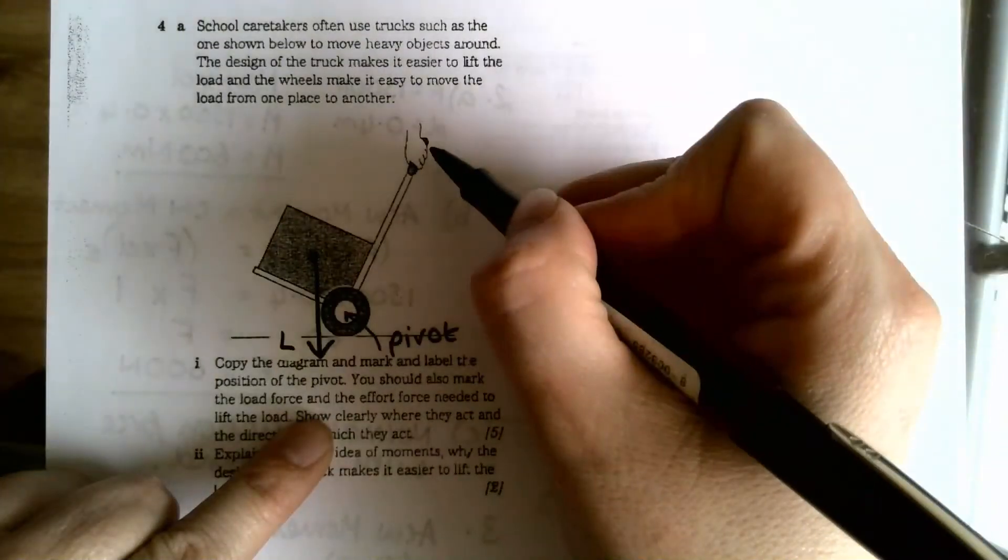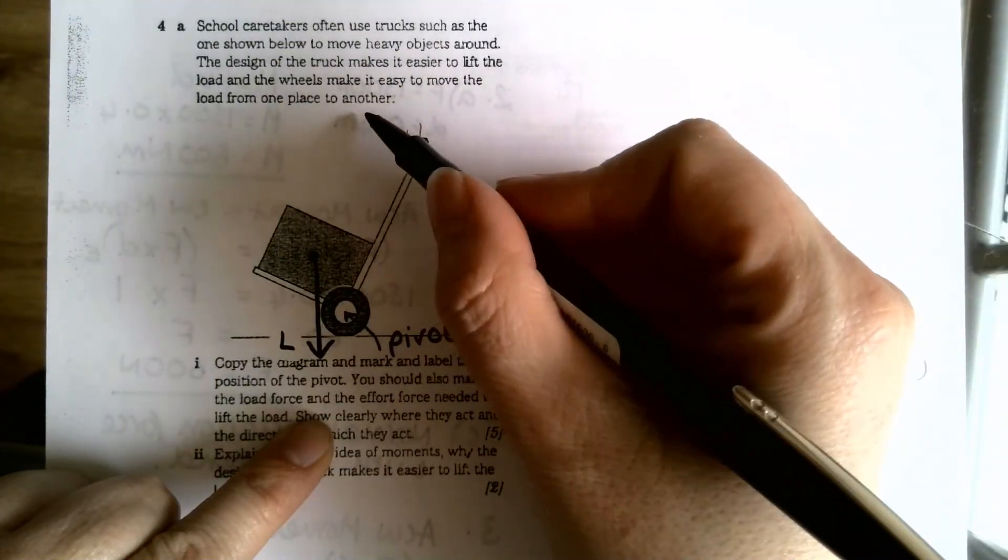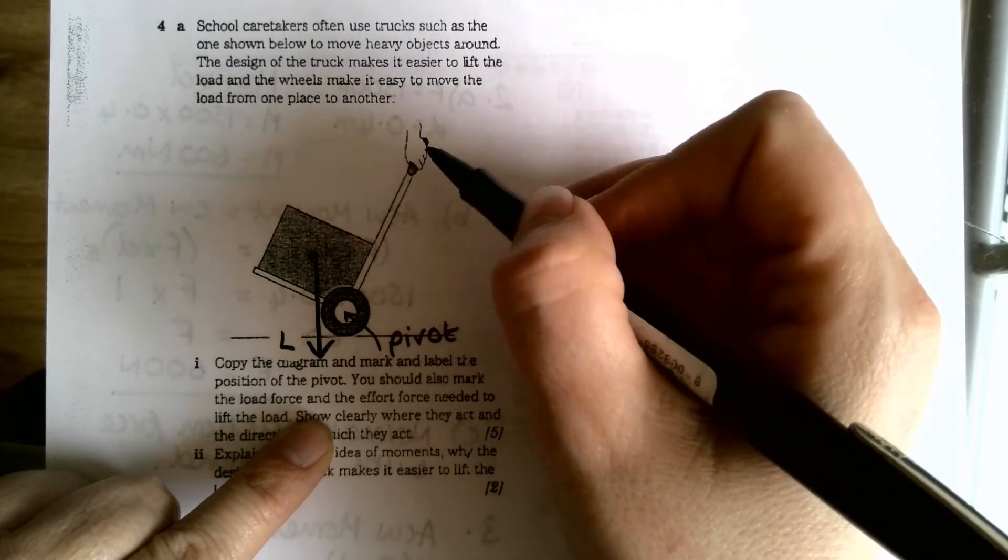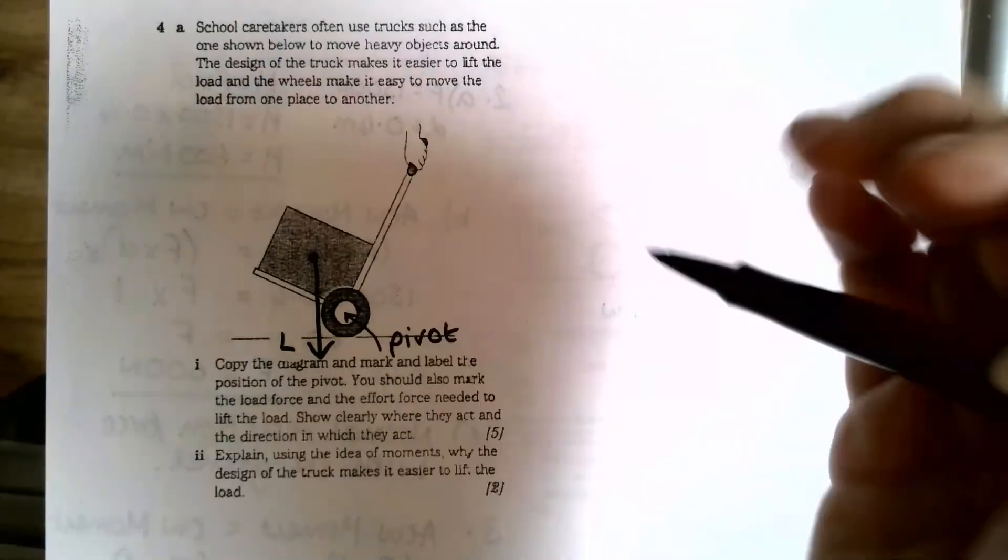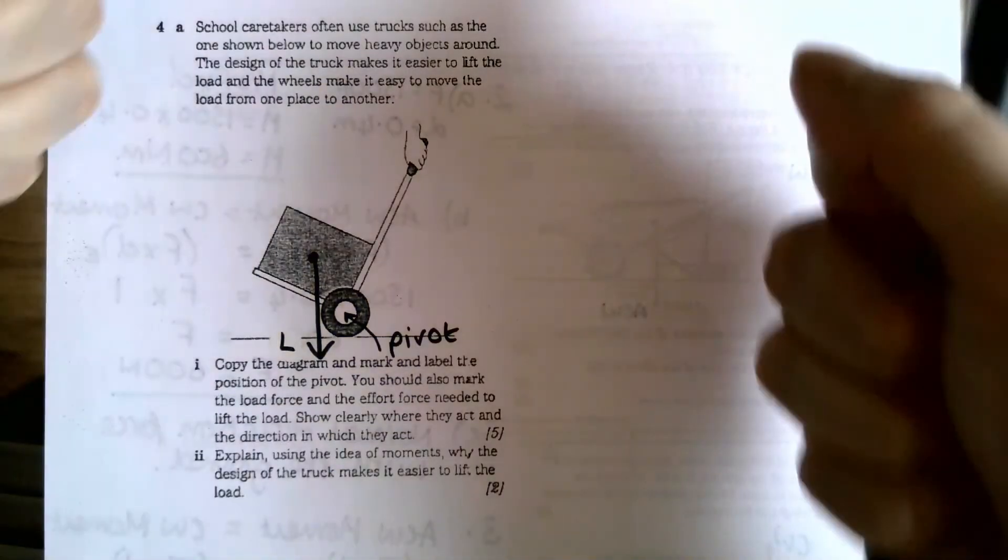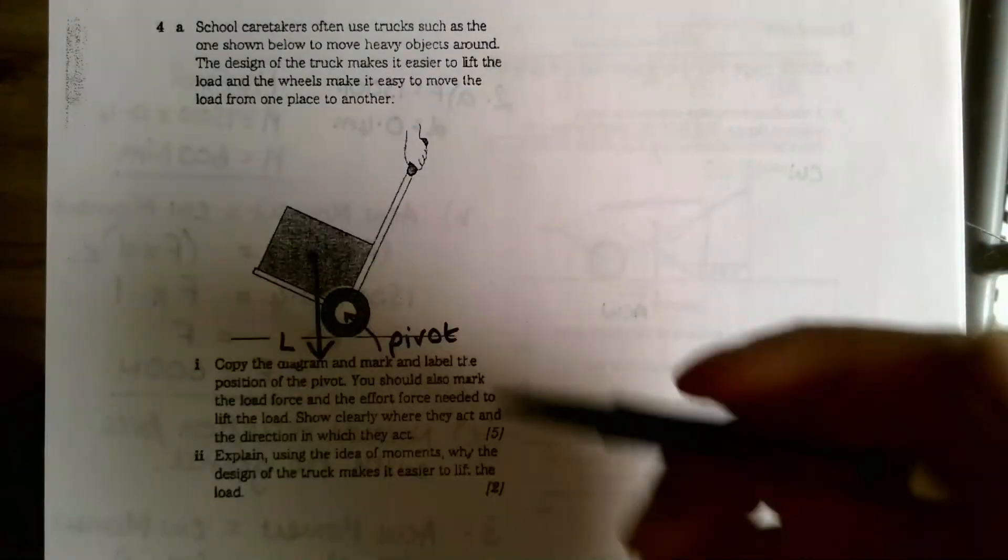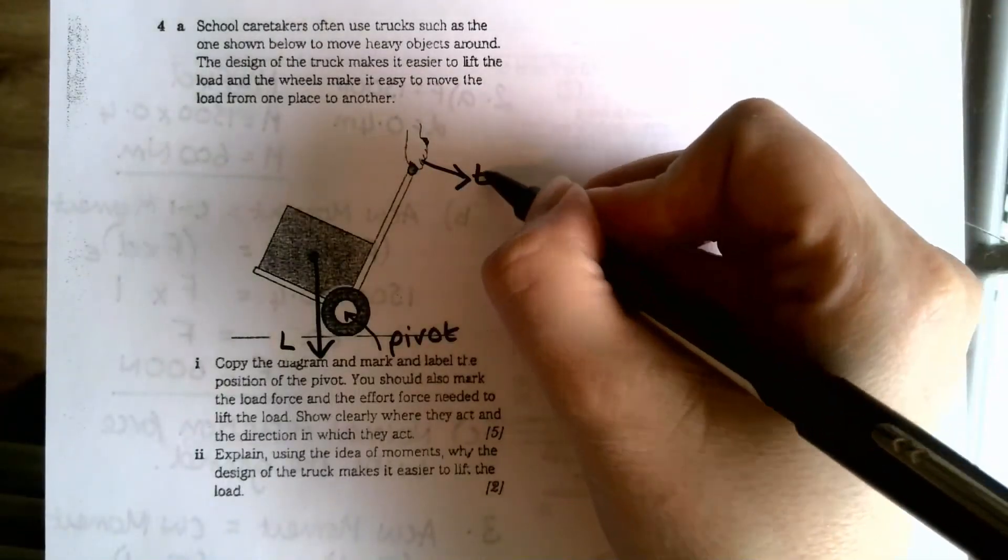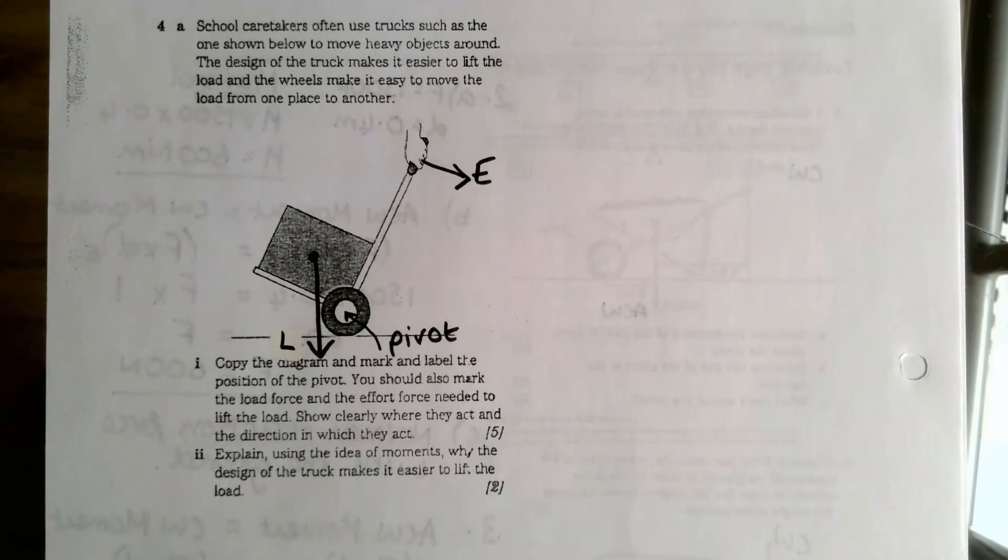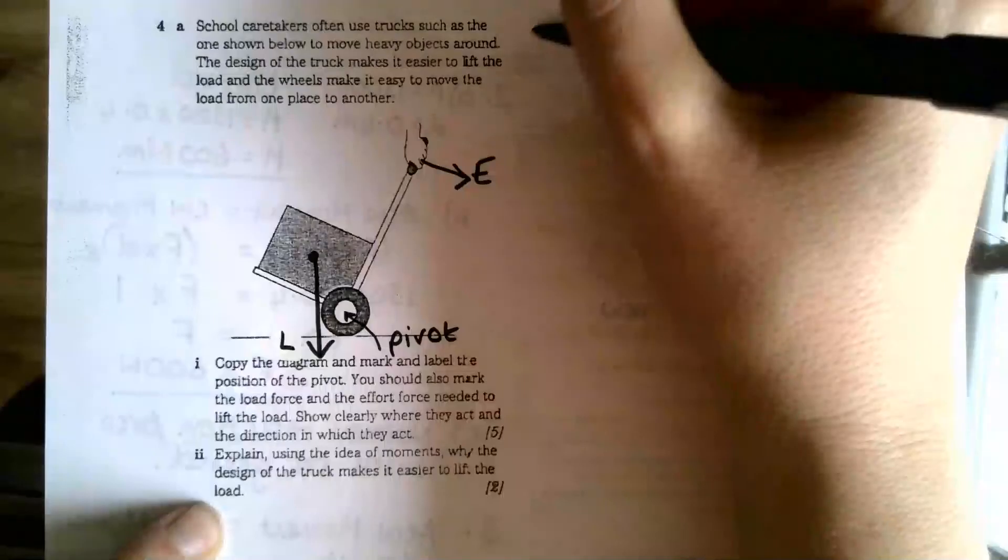Okay, and the effort force needed to lift it. Now my instinct would probably be to mark that on that way, but that's wrong, because if you think, if you imagine yourself using it, what way? You're going to pull, your hands are on this, you're going to be pulling them back towards you, so the effort force actually goes this way. Okay, so that's part one done. Part two: explain using the idea of moments why the design of the truck makes it easier to lift the load. So I'm going to answer this up here.